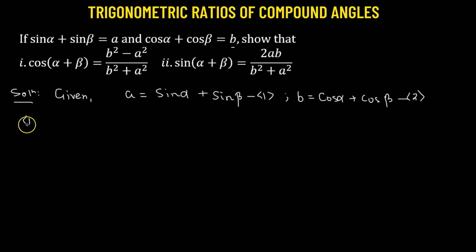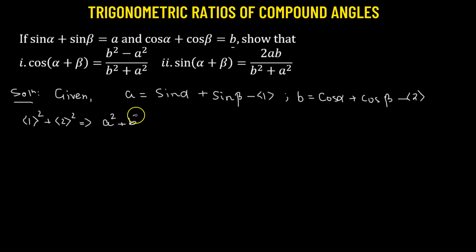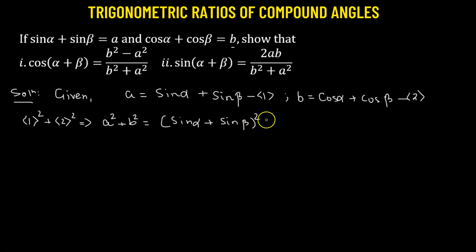What we'll do is square equation 1 and add it to the square of equation 2. That means we are going to get a squared plus b squared, which must equal sine alpha plus sine beta whole squared, and to it we add cosine alpha plus cosine beta whole squared.